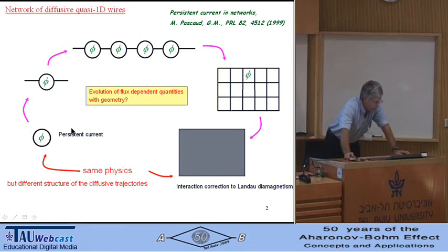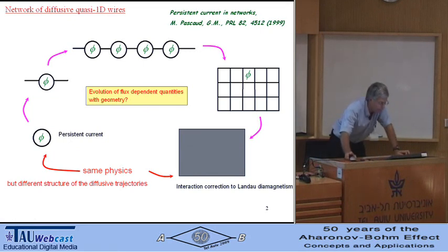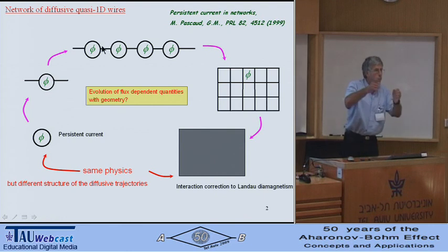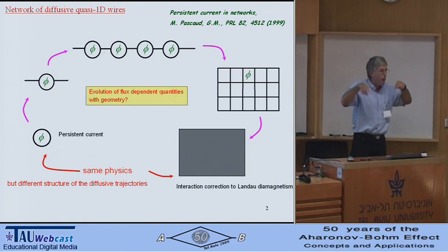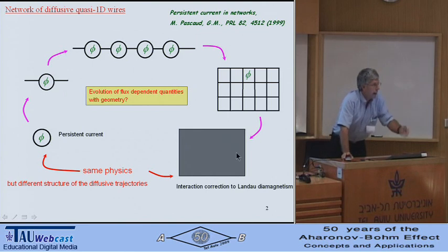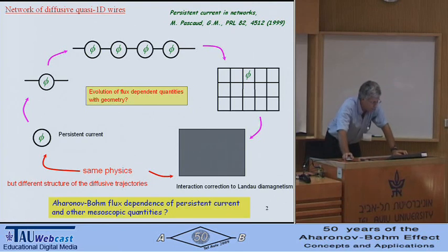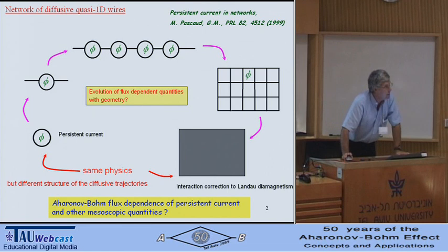My interest was to see what happens to this persistent current when it is not really a property of the isolated ring. You still have a persistent current if you connect rings, but the question is what happens to it. The answer amounts to understanding how current loops conspire between different rings. The physics of persistent current goes continuously from the isolated ring to two-dimensional magnetism of two-dimensional metals, with different structures of diffusive trajectories. The point I want to address is what we can say about the Aharonov-Bohm flux dependence of persistent current and other mesoscopic quantities when we change the geometry of these networks.